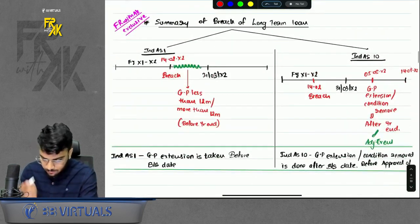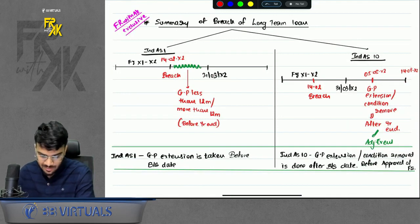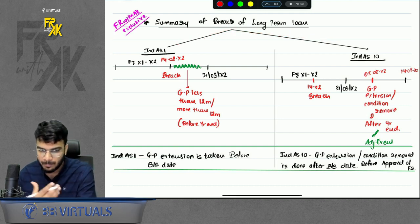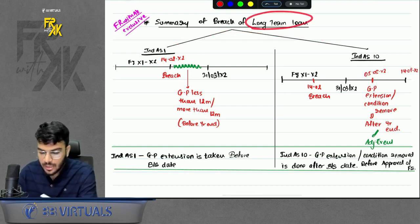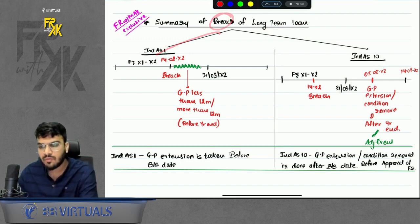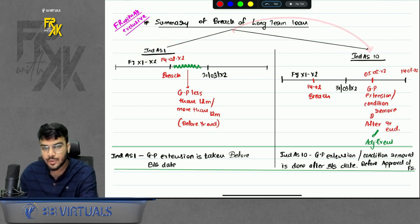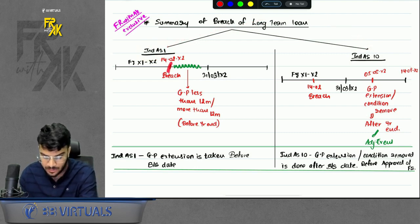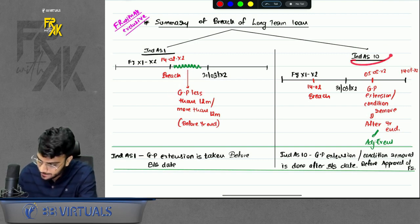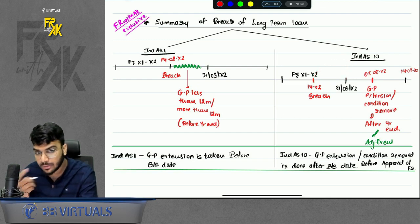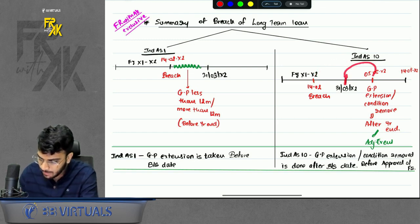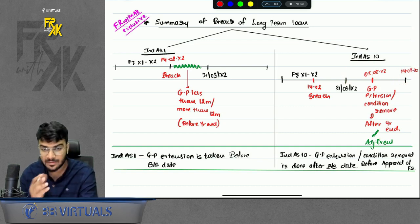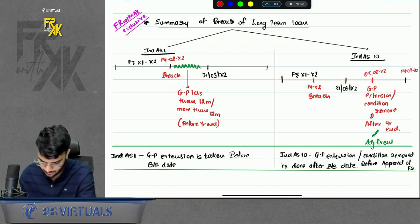This is an exclusive point built on our understanding. The difference between the breach discussed in IND AS 1 and IND AS 10: in IND AS 1, the breach happened before year end and the grace period was also obtained before year end. In IND AS 10, the breach happened before year end but the extension or removal of the condition happened after year end but before approval of financial statements.